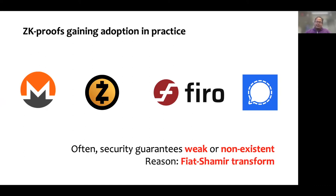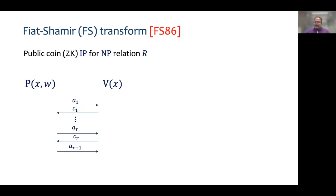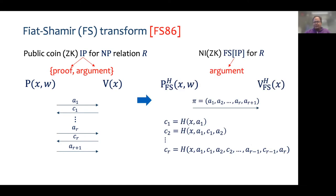The underlying reason for this issue is the use of the Fiat-Shamir transform. Before I explain why that is the case, let me briefly recall what the Fiat-Shamir transform is. It starts with an interactive proof or argument, which is public coin — that is, the verifier's messages are random challenges. It uses a hash function to transform the interactive protocol into a non-interactive argument. The idea is that the hash function plays the role of the verifier in computing the next challenge from the transcript so far.